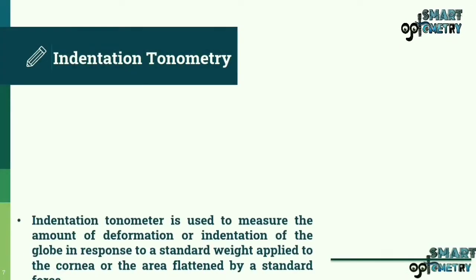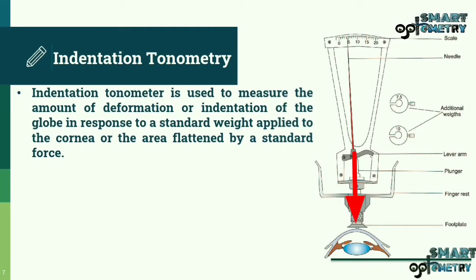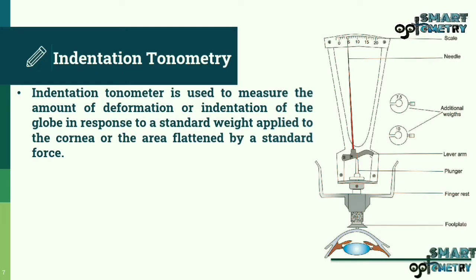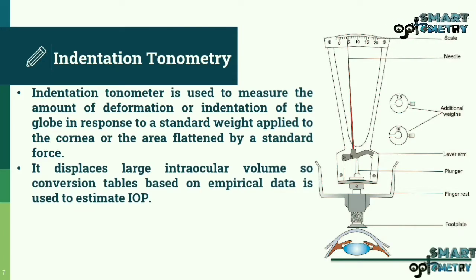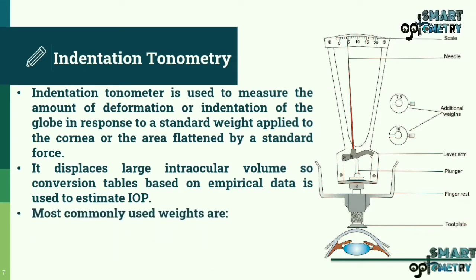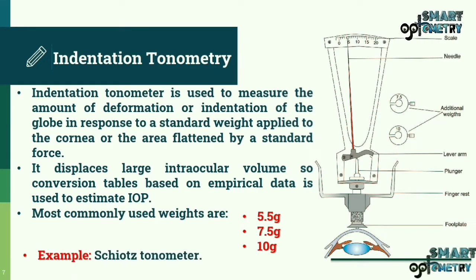Indentation tonometry: the indentation tonometer measures the amount of deformation or indentation of the globe in response to a standard weight applied to the cornea, or the area flattened by a standard force. It displaces a large intraocular volume, so a conversion table based on empirical data is used to estimate IOP. Most commonly used weights are 5.5 g, 7.5 g, and 10 g. Example: Schiotz tonometer.